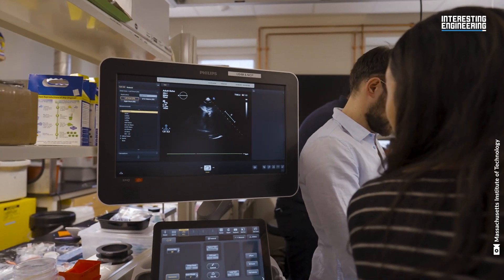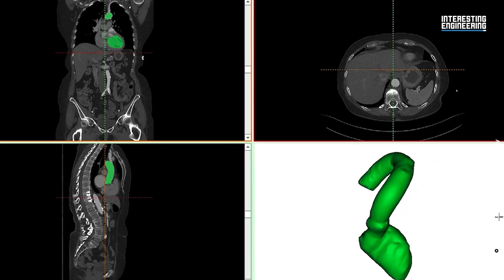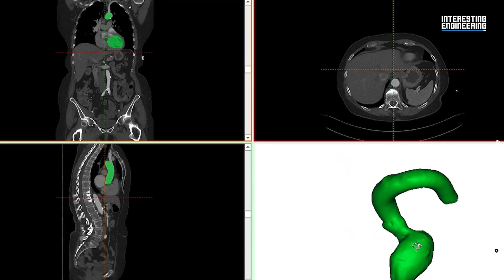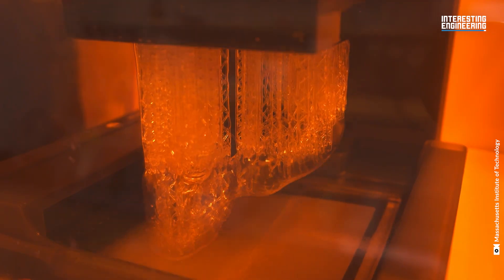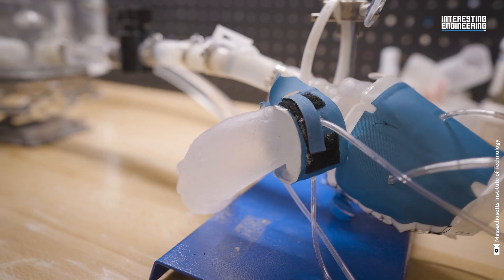MIT's 3D printed heart replicas represent a monumental step forward in personalized medicine. By providing a more accurate and patient-specific model, these replicas could revolutionize the way heart diseases are treated, paving the way for more effective and tailored interventions.